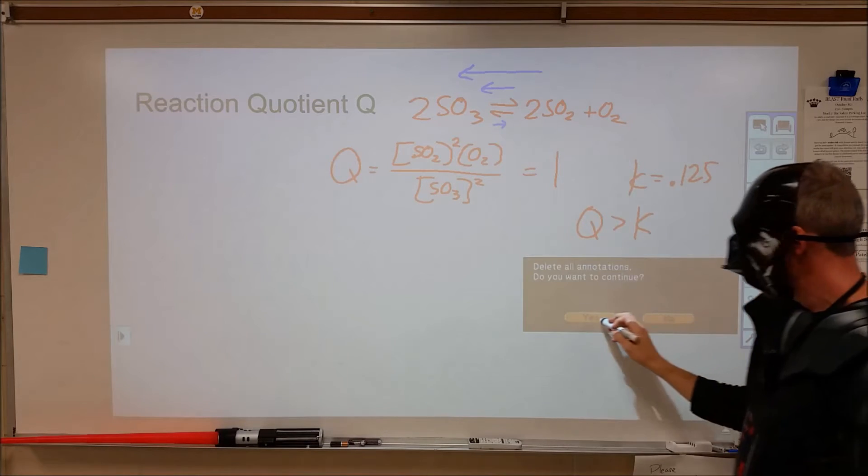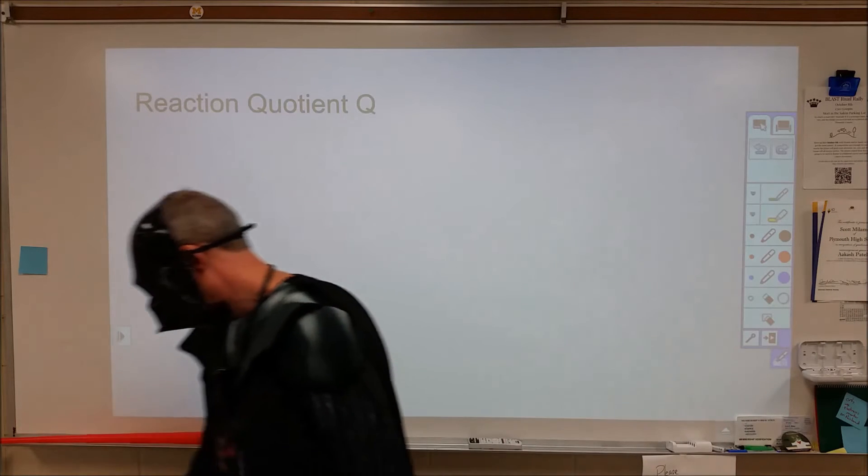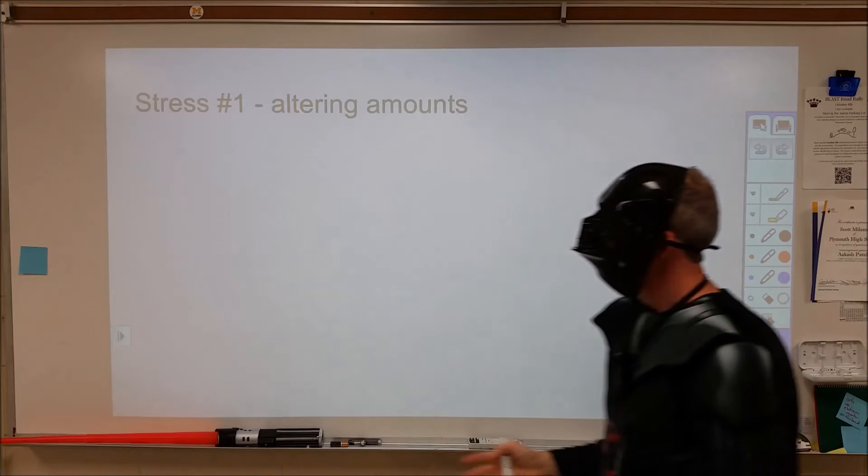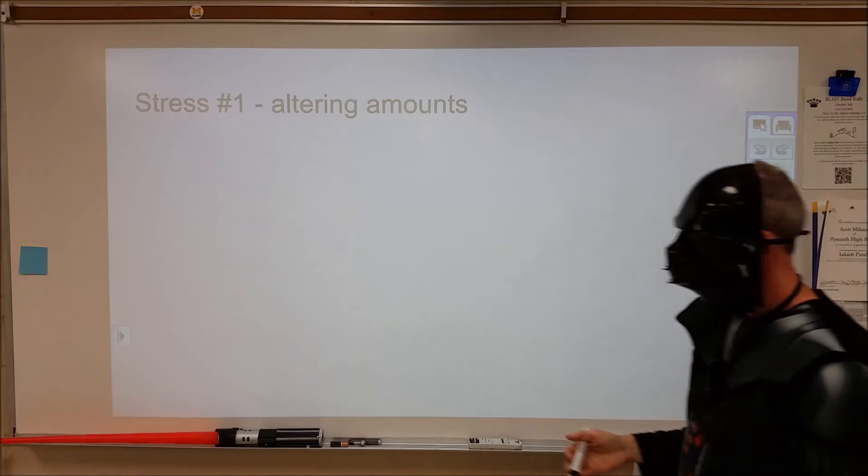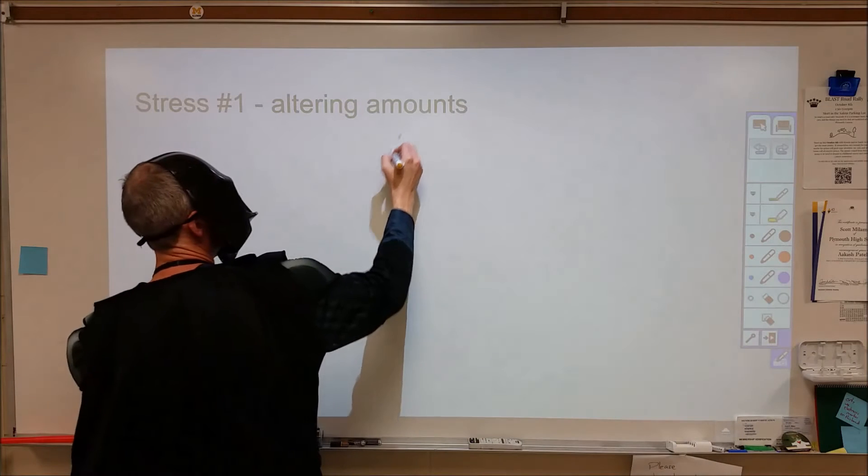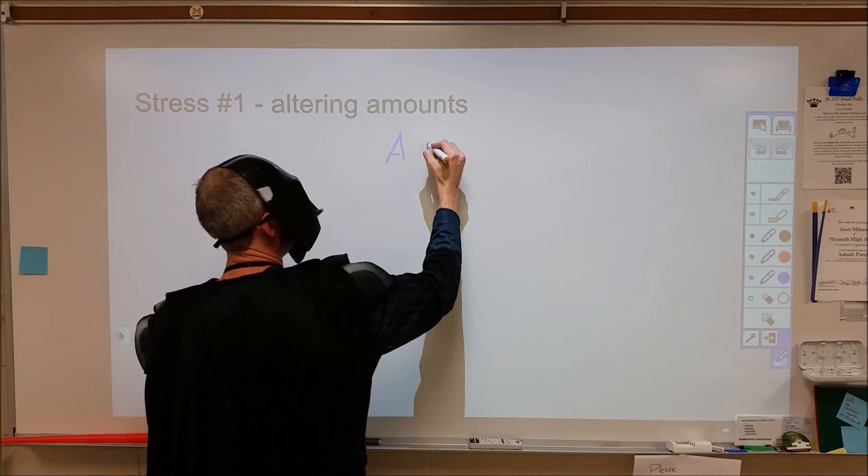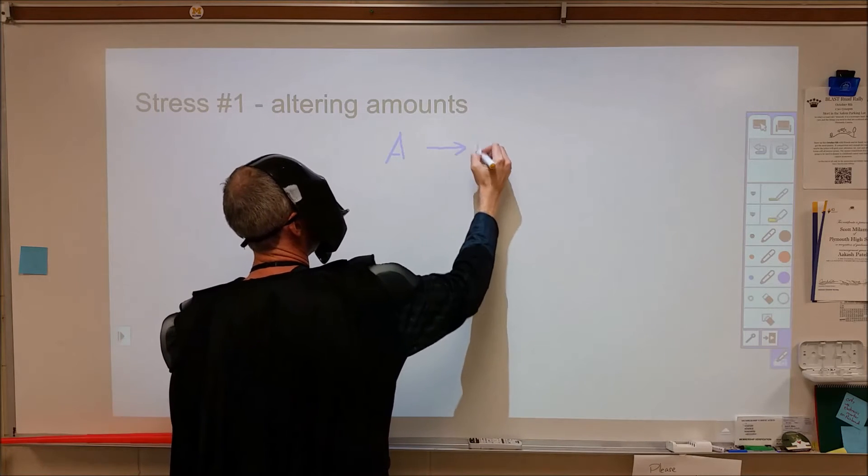Now, there are three common applications of this. These can all be done mathematically using the Q values. Altering amounts is the first one. Let's take a really simple reaction: A turns into B.